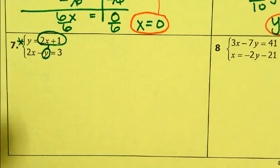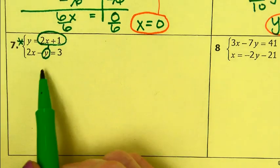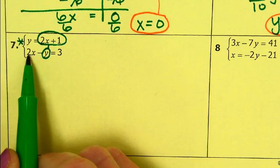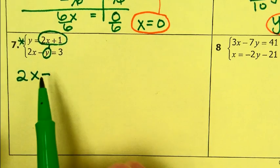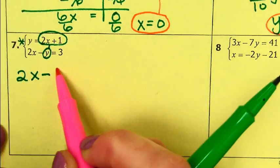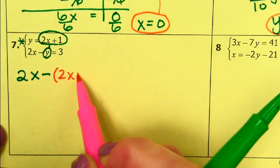So be really careful because what's happening here is I have 2x minus y. So when I substitute, if I replace the y with 2x plus 1...